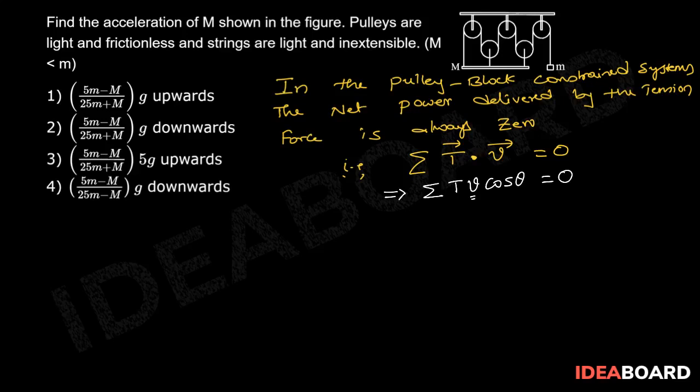Now, let us solve the given problem using this statement. As the string connected from capital M to small m is a single string, if the tension in this string is capital T, then tension in this string at any point will be capital T.